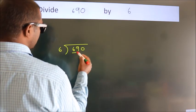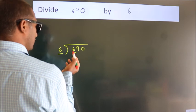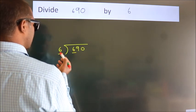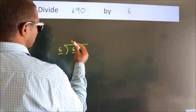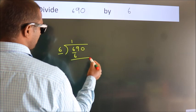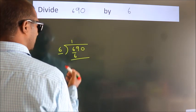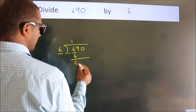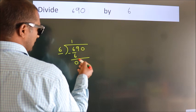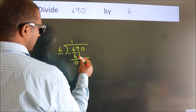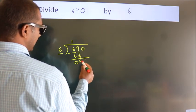Here we have 6. Here 6. When do we get 6? In the 6 table. 6 once, 6. Now we should subtract. We get 0. After this, bring down the beside number. So, 9 down.